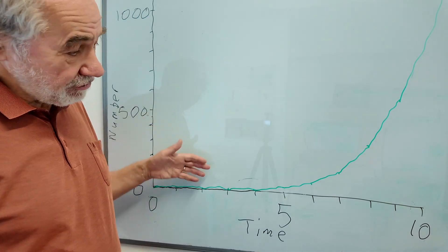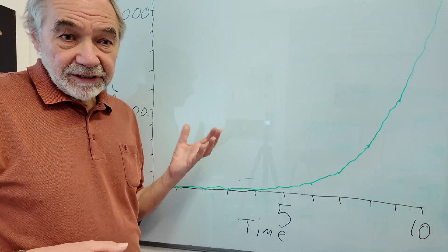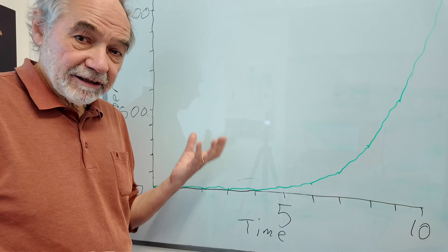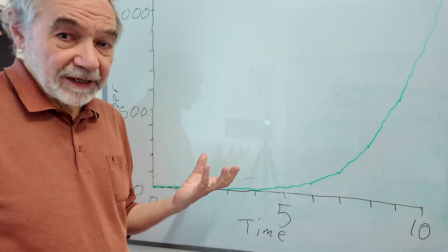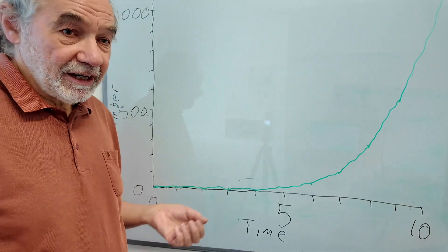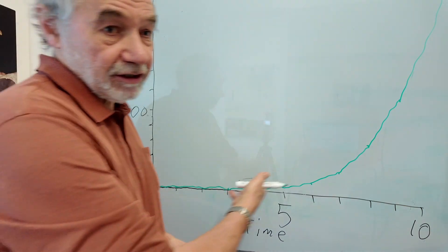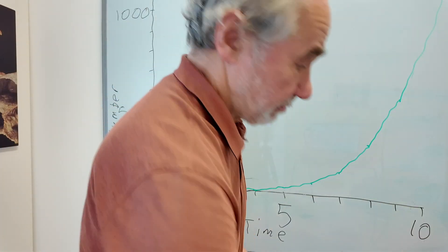This increases as a number to the power of two, technically to the exponent of two. So this is called exponential growth and characteristically the numbers increase dramatically.